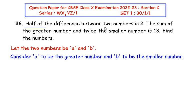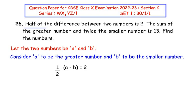Half of the difference between the two numbers is 2. So half is nothing but 1 over 2, and 'of' in mathematics represents a product. So 1 over 2 times the difference between the two numbers, a minus b, is equal to 2.